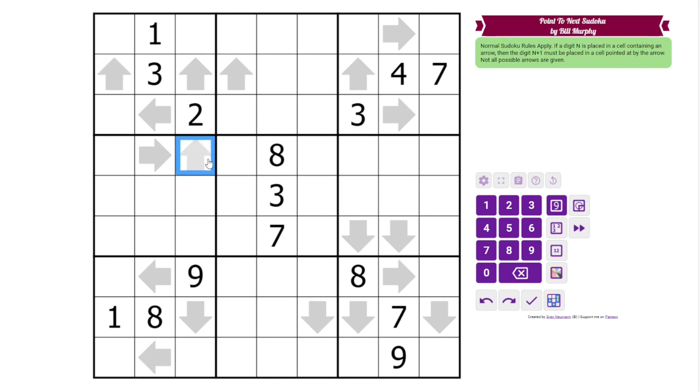So if we look at this arrow, if this were a 6 it would be telling us that there is a 7 somewhere here. Now a lot of these only point to one cell, so that's going to tell us that whatever this is, this is one higher. So that's going to be useful.